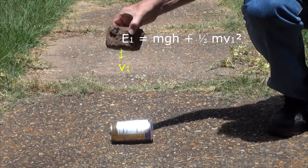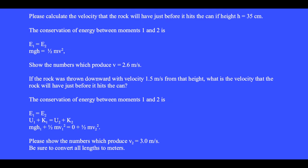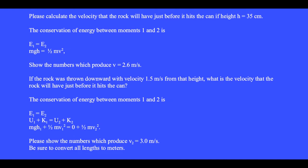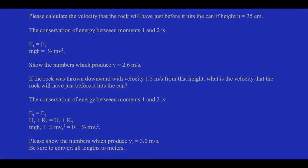If the rock was thrown downward with velocity 1.5 meters per second from that height, what is the velocity just before it hits the can? The conservation of energy between moments 1 and 2 is E1 equals E2: gravitational energy U1 plus kinetic energy K1 equals U2 (which is zero) plus kinetic energy K2. This gives mgh1 plus ½mv1² equals ½mv2². Please show the numbers which produce v2 equals 3.0 meters per second.